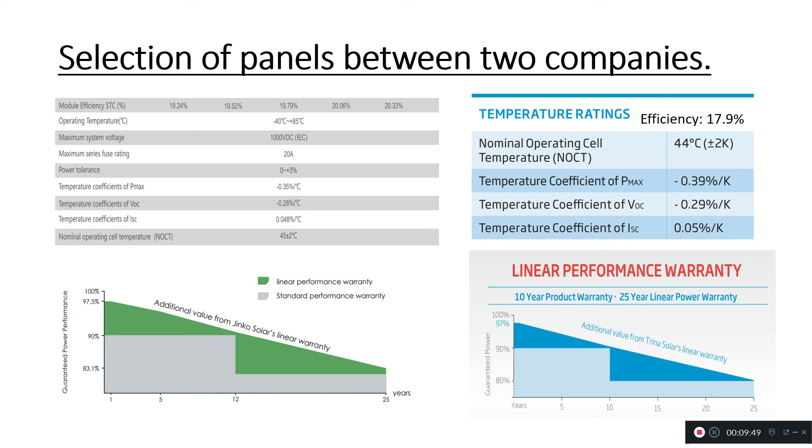First part you need to consider is the module efficiency. As you can see here, for 350 watt peak module the efficiency is 19.52 percent whereas for this it is 17.9 percent. The detail was on another part of the datasheet and I was not able to capture it in one image, that's why I have manually written it here. You can see that in comparison this particular module is more efficient than the other one.